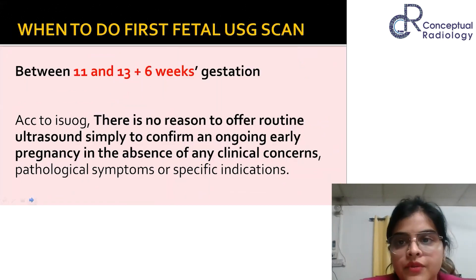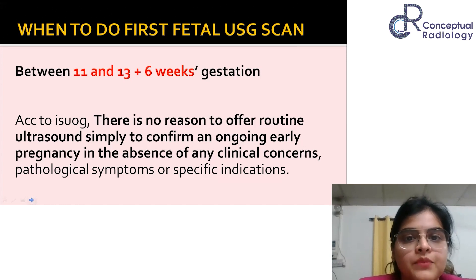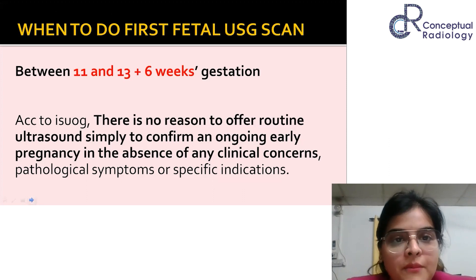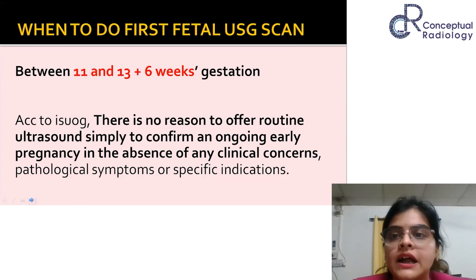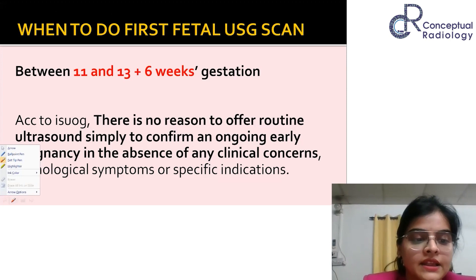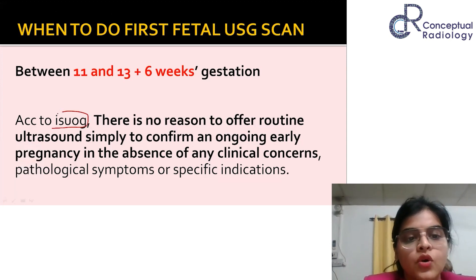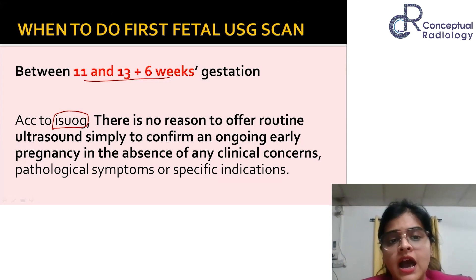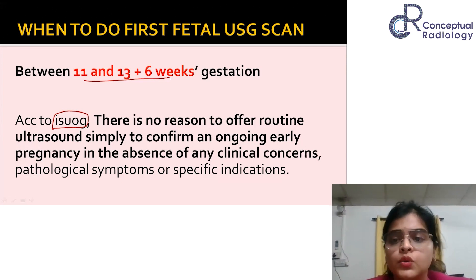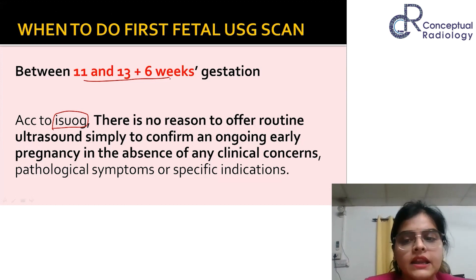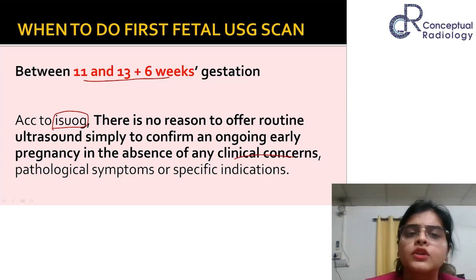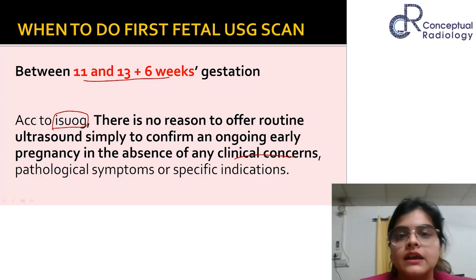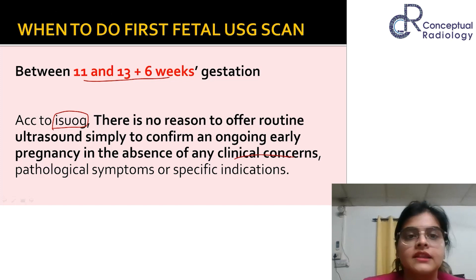After biochemical and clinical diagnosis of pregnancy, when does the radiologist come into the picture? According to the ESUOG guidelines, the very first scan should be performed between 11 and 13+6 weeks of gestation. There is no reason to perform an ultrasound before 11 weeks unless there is a clinical concern such as bleeding or suspicion of ectopic pregnancy. To simply confirm an ongoing pregnancy, a scan before 11 weeks is not necessary, as the first trimester ultrasound at 11–14 weeks serves specific objectives.